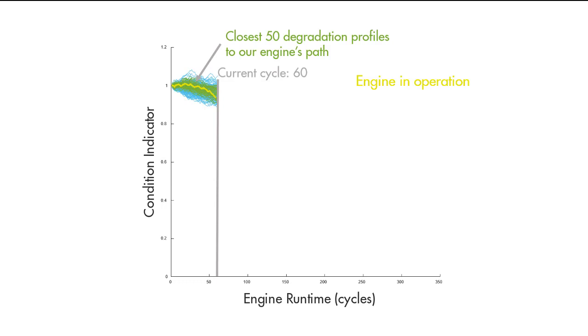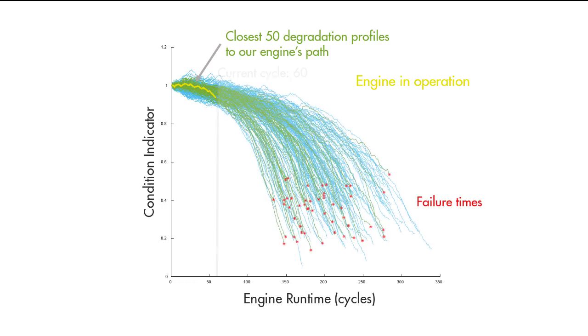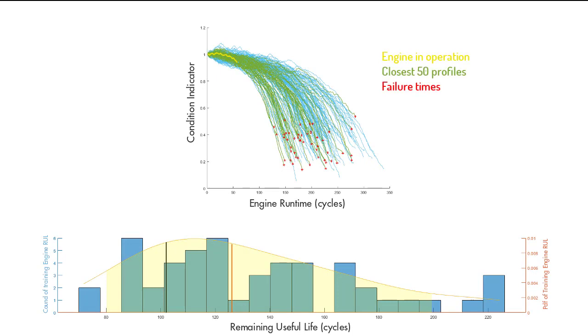they can give us an idea about the expected failure time of our engine because we already know their failure times and we can use this data to fit a probability distribution as seen here. The median of this distribution gives us the remaining useful life estimate of our engine.